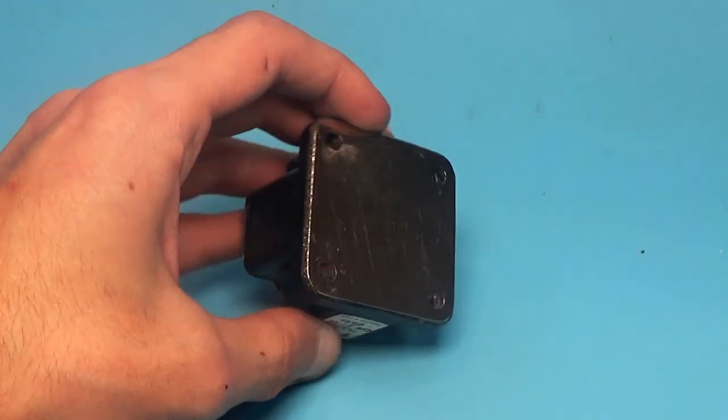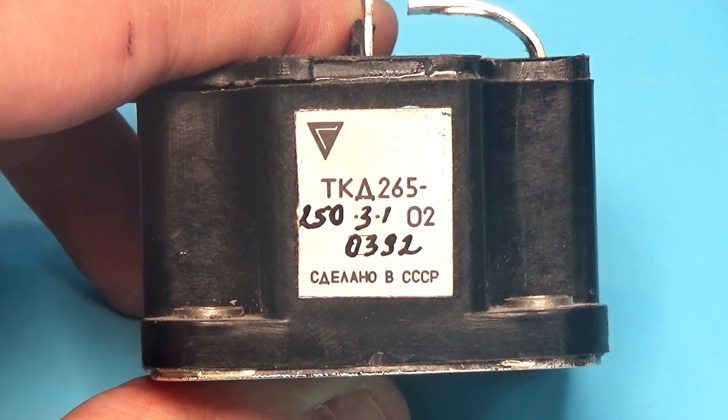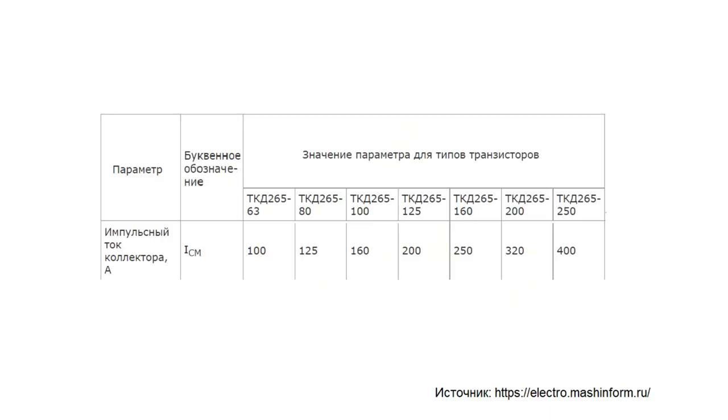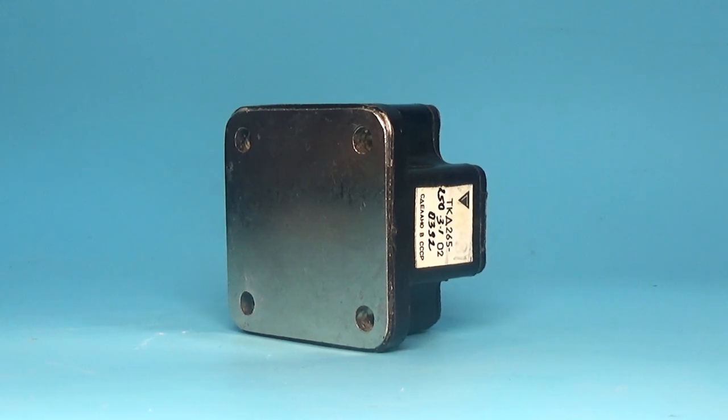For you to appreciate all its greatness, I will give you a couple of characteristics. The pulse current of the collector is as much as 400A, and the pulse power dissipation is as much as 89,000W. Yes, it is 89kW, and this is a lot. It's a hell of a lot.